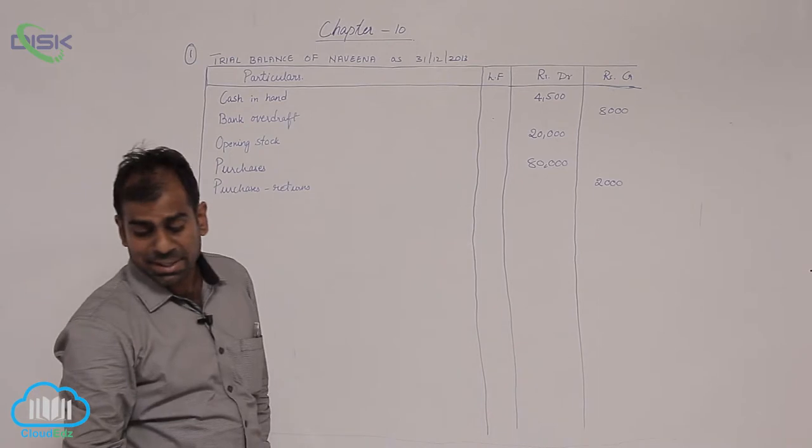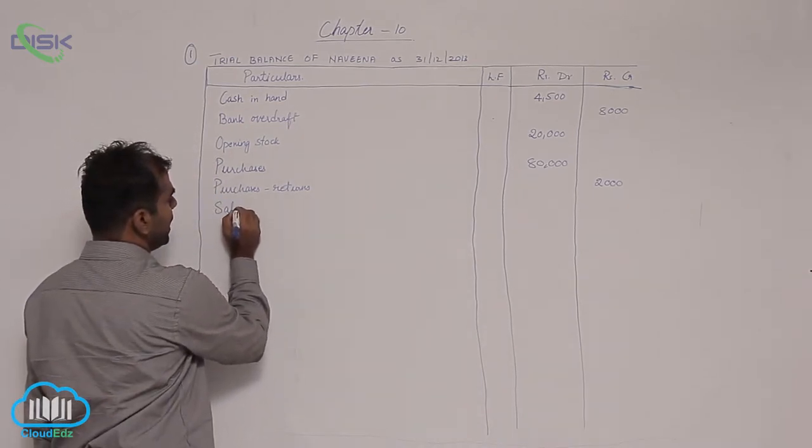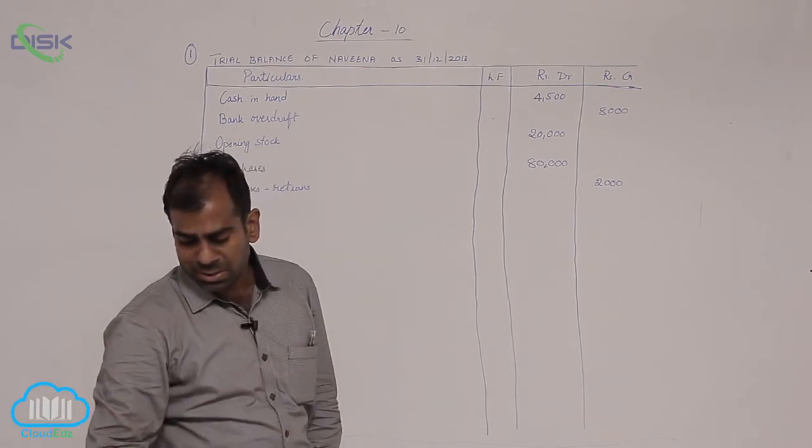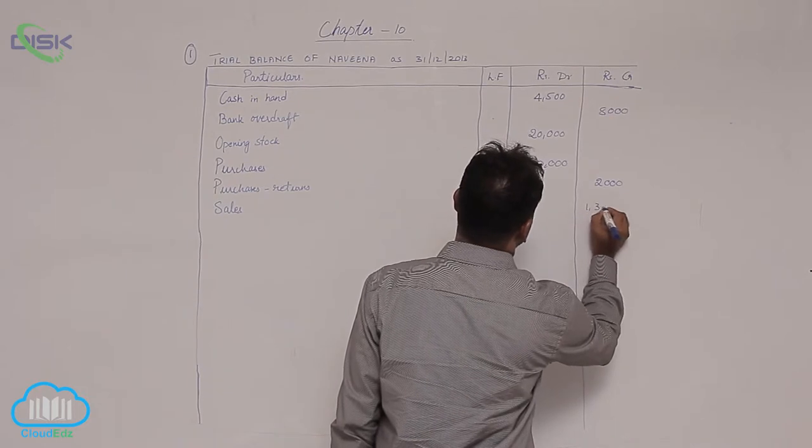Then we have next item sales. So sales we credited in journal entry. You should also remember sales shows credit balance. So 130,000.